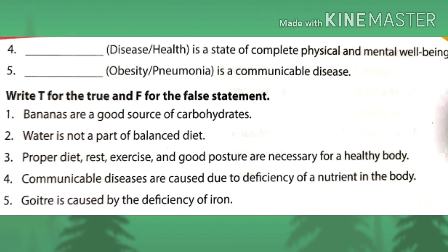Fourth blank: this is the state of complete physical and mental well-being — the answer is health. Fifth blank: this is a communicable disease — the answer is pneumonia, as it can spread from one person to another, whereas obesity does not spread from one person to another.